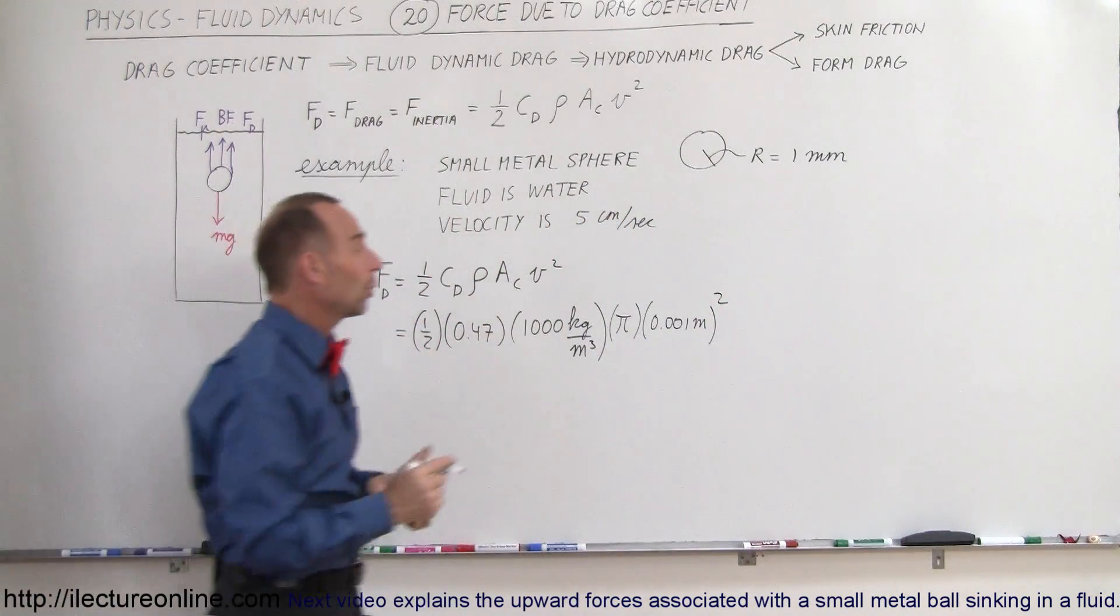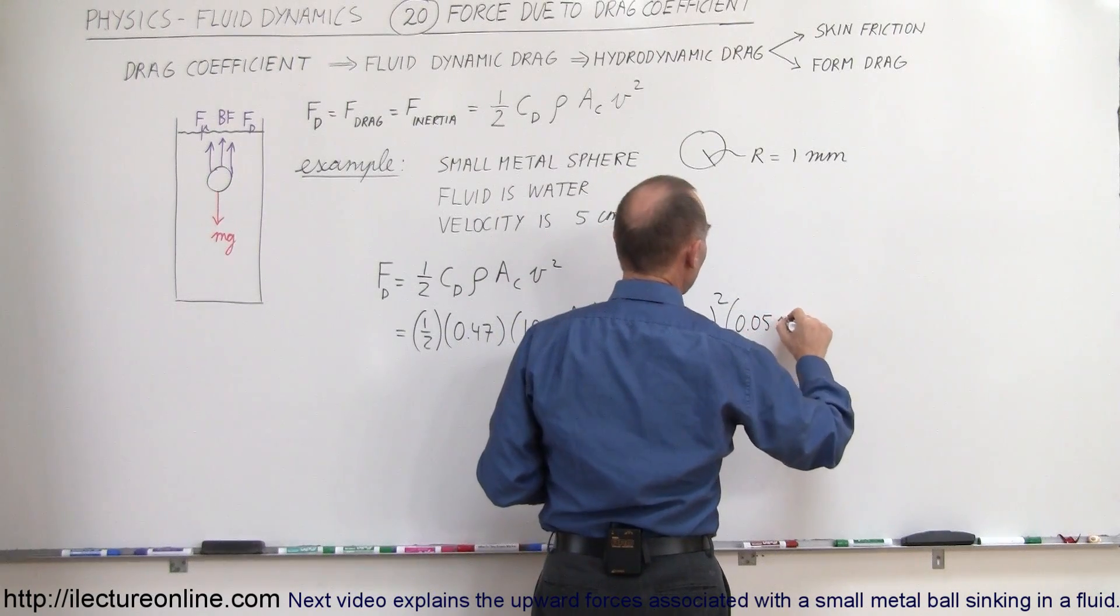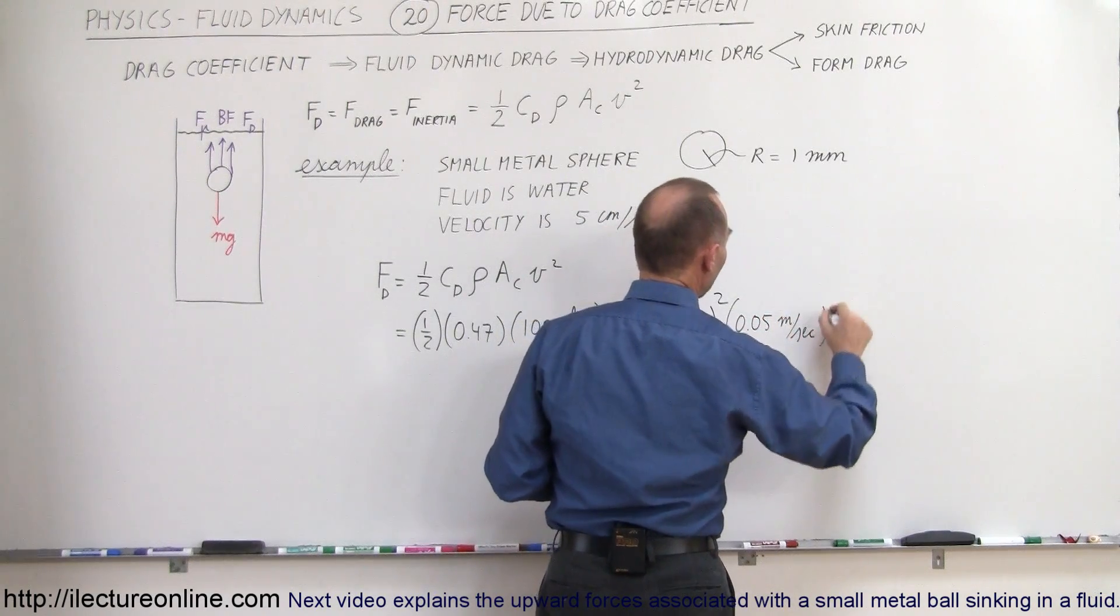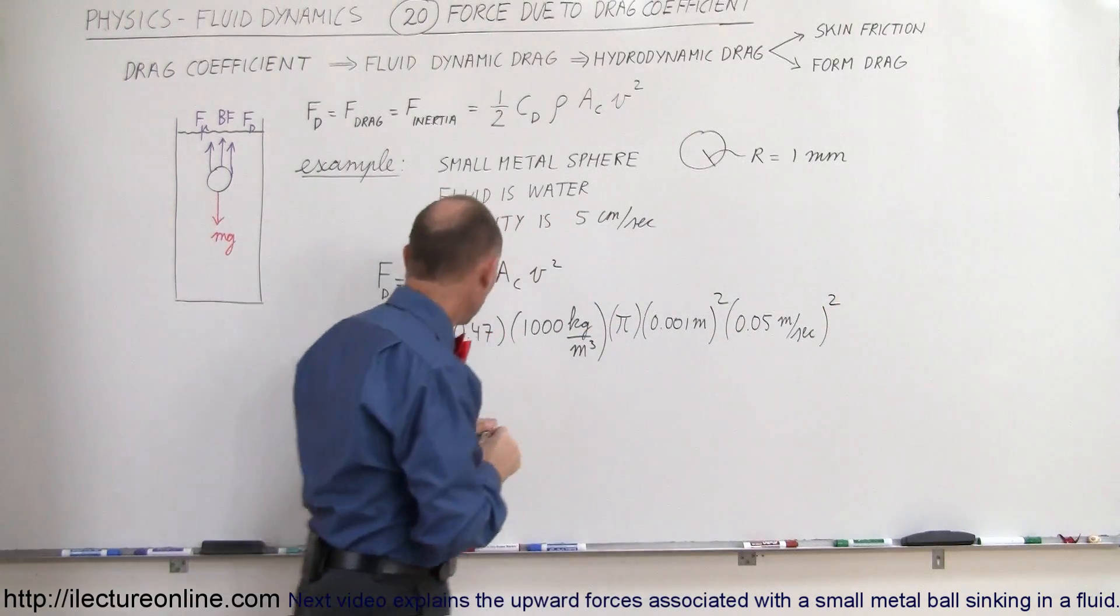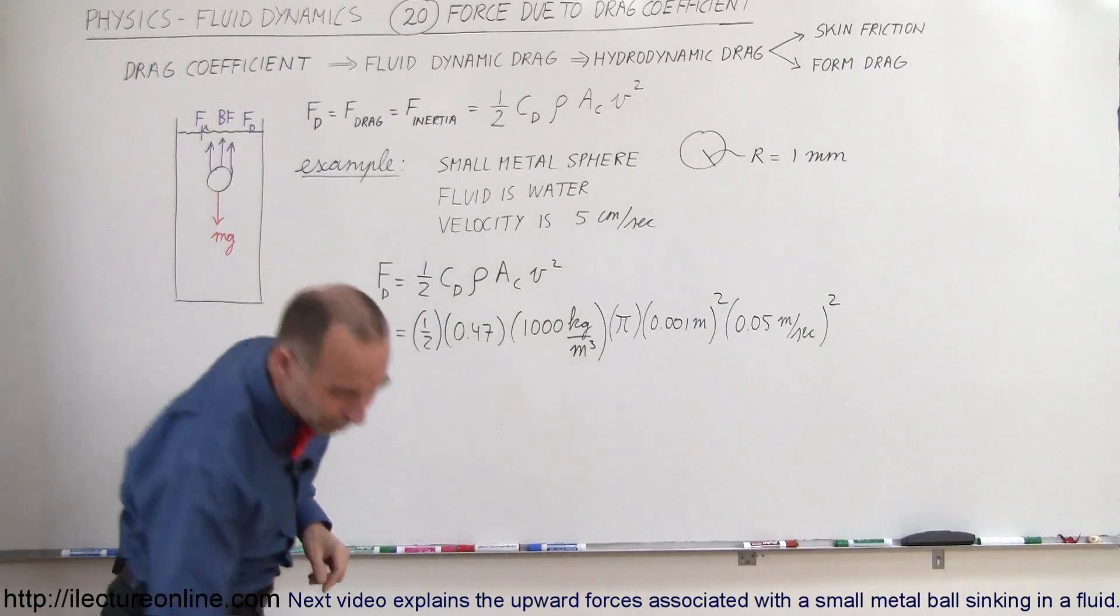And then finally the velocity squared. So in this case the velocity is 0.05 meters per second, and we have to square that. Now I'm assuming that all these units put together will give us newtons, we'll check that in just a moment.